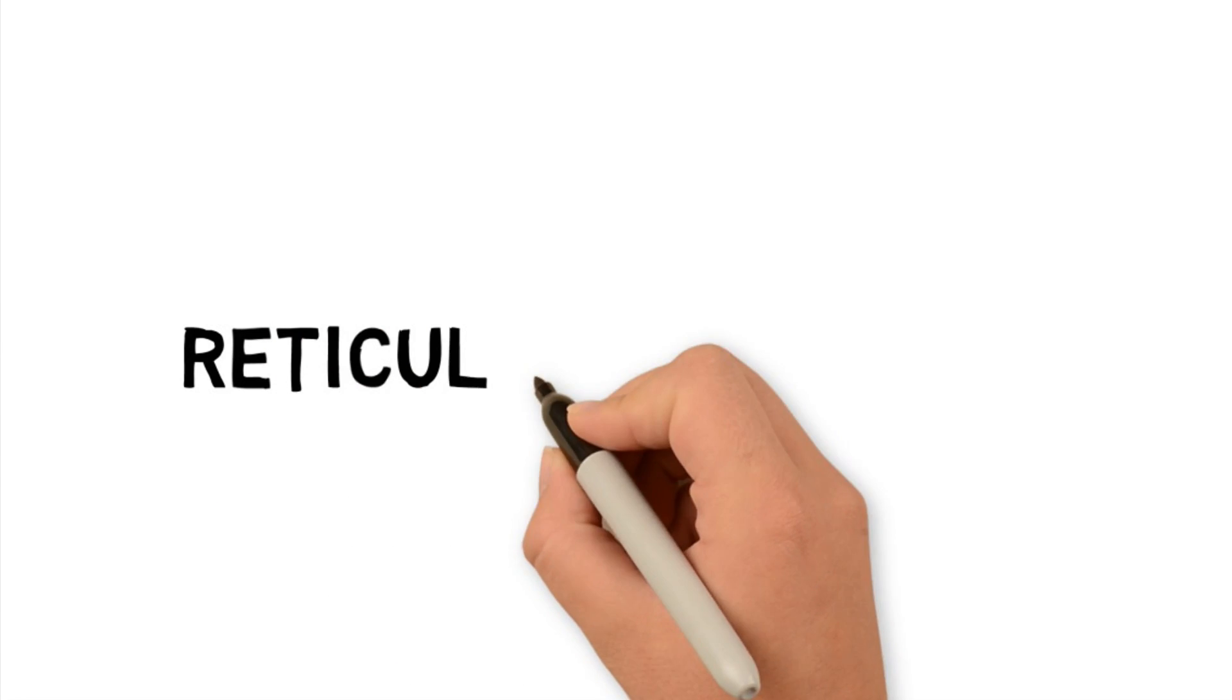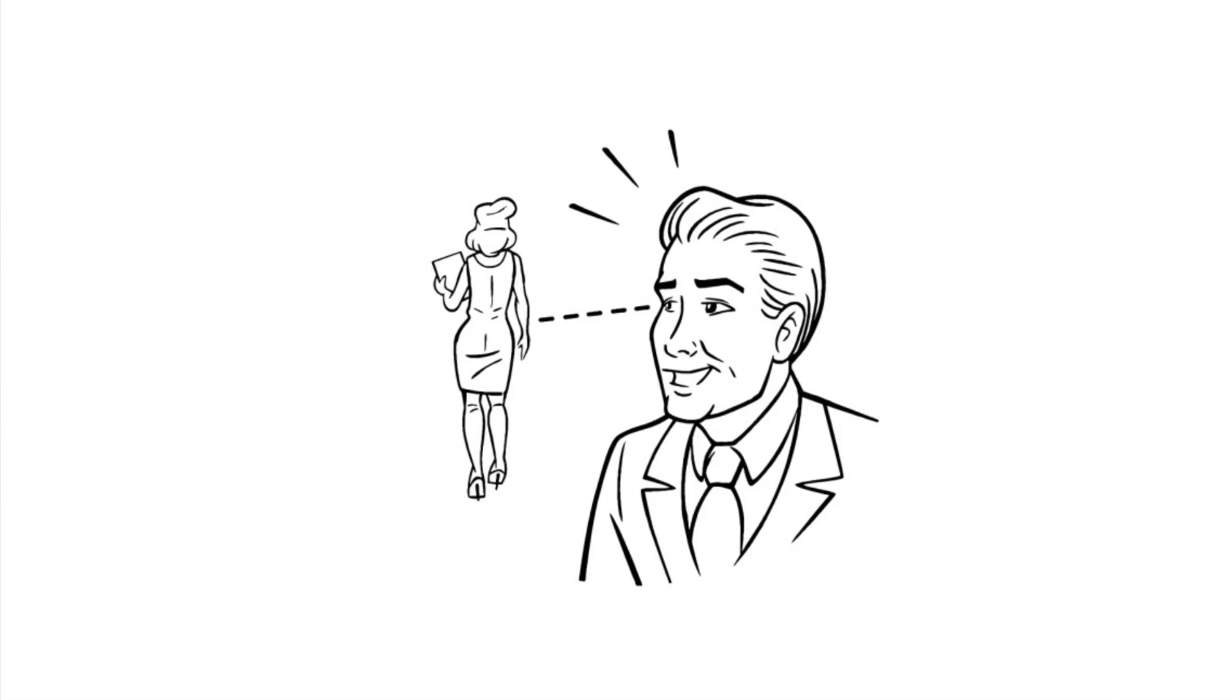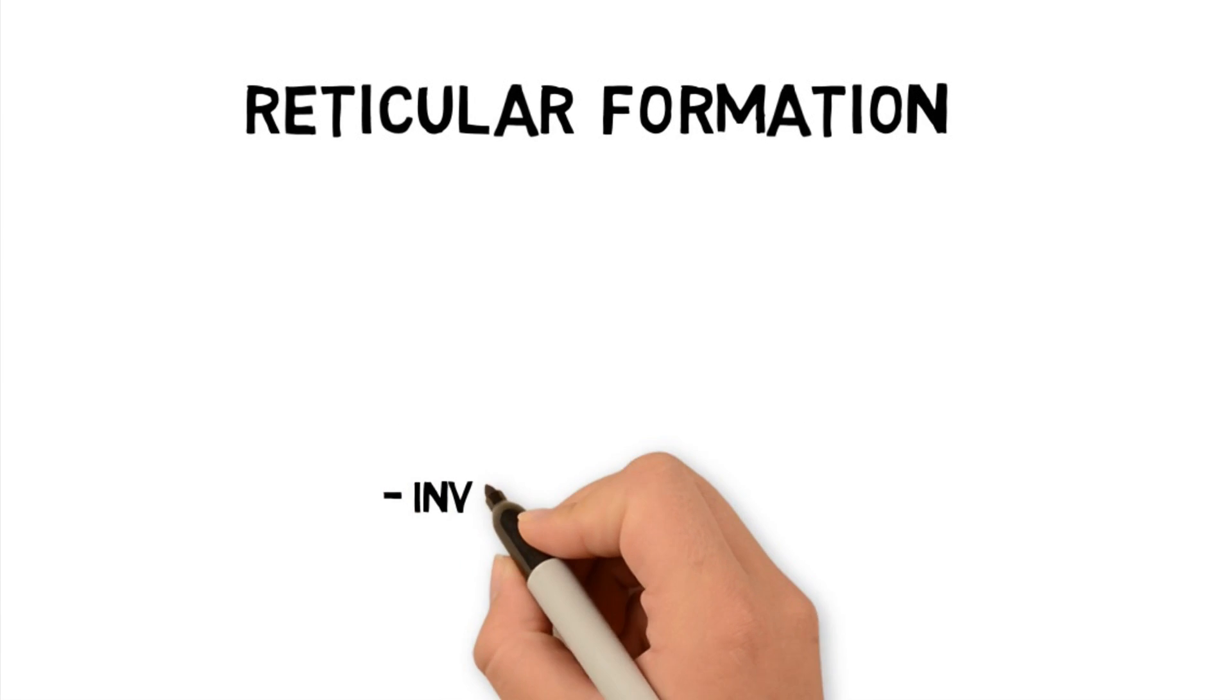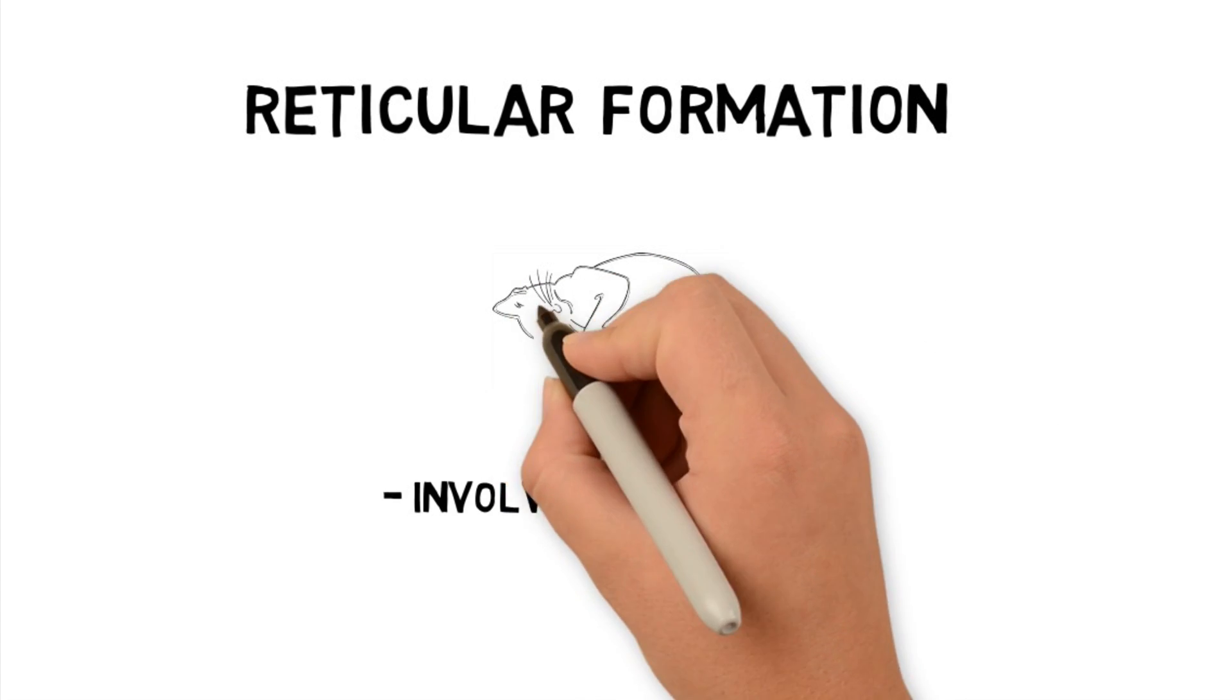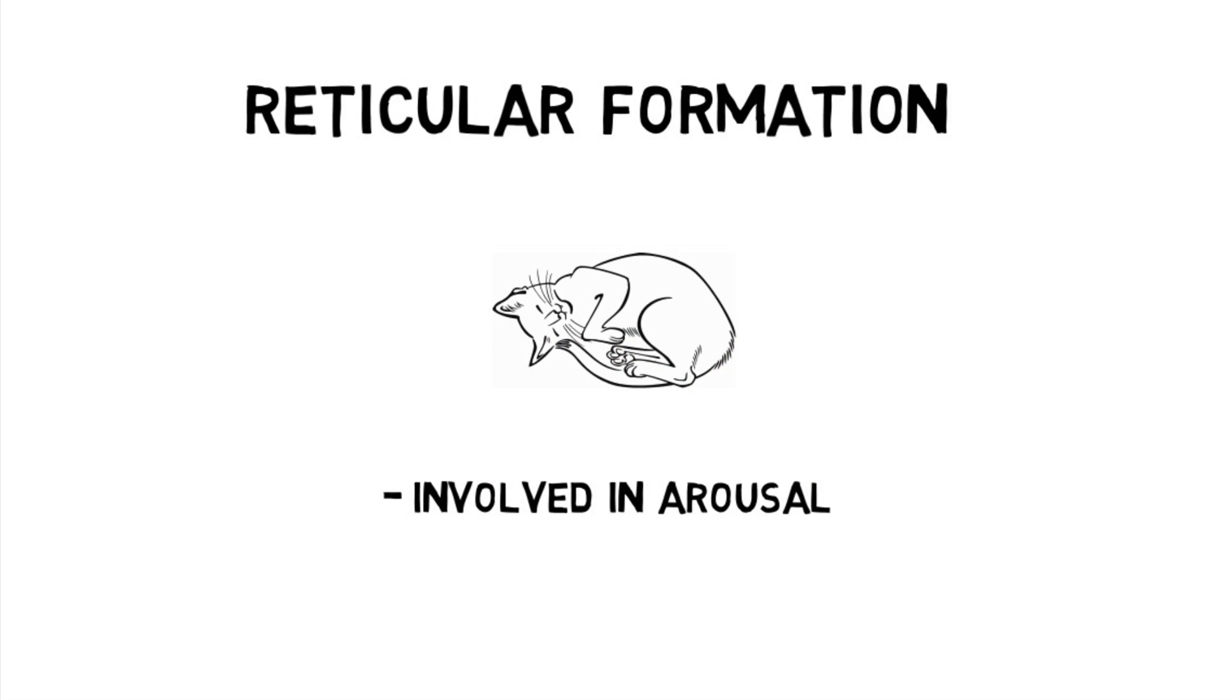Located next to the pons is the reticular formation, which is involved in our arousal. Not that kind of arousal, perv, but being awake versus asleep. When scientists remove the reticular formation in animals, like cats, they'll fall into a coma and they'll never, ever wake up.